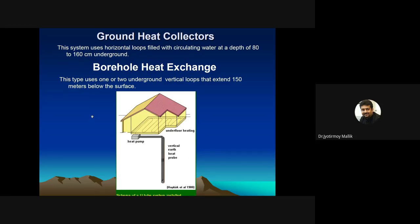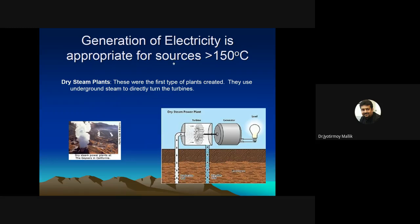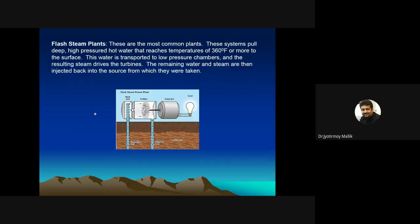Electricity generation only happens when the water coming up has a temperature of more than 150°C. The first type of electricity plant is the dry steam plant — the earliest type created. These use underground steam directly to drive a turbine. The underground water is so hot that steam comes out, which can be channeled in a controlled way to rotate a turbine. The water condensed from this process is pumped back into the ground.